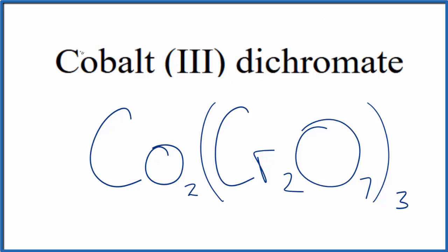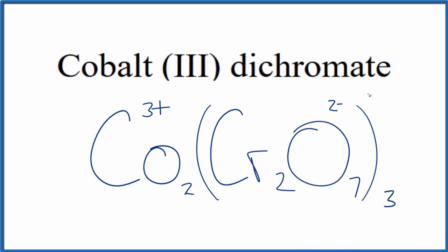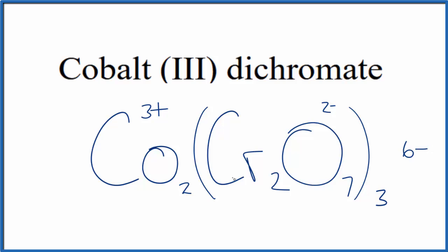But let's check our work. We said cobalt, that'll be 3 plus, and then the dichromate, the whole thing is 2 minus. 3 times 2 minus, that's 6 minus. 2 times 3 plus, 6 plus. These two numbers add up to zero, give us a net charge of zero.